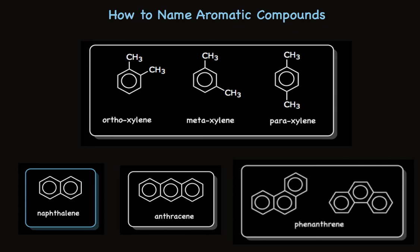Naphthalene is in a blue box — you absolutely must learn its structure. Notice there are only two different types of carbons in naphthalene that can have substituents. One is adjacent to the fused rings — we call this the 1 position, or alpha. The other carbon is next to that one — we call it the 2 position, or beta. The alpha and beta designations are common nomenclature, while the numbers are used for IUPAC systematic nomenclature.